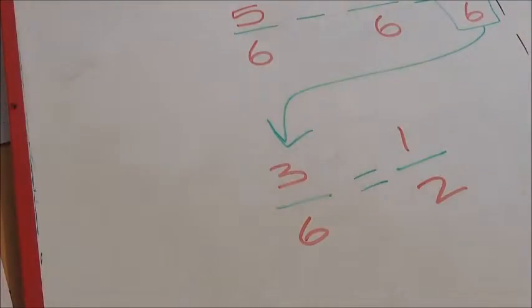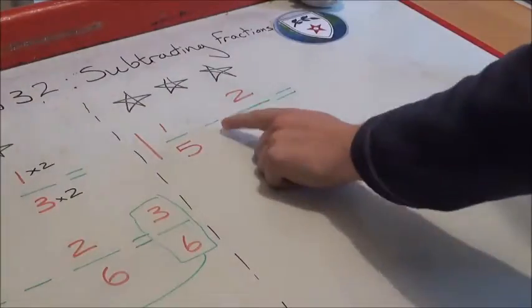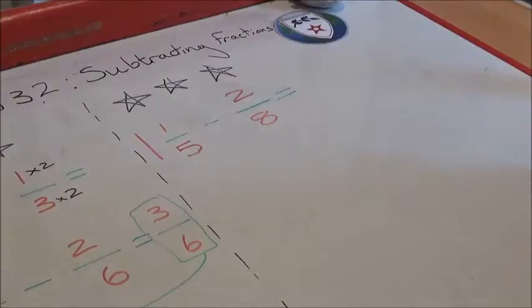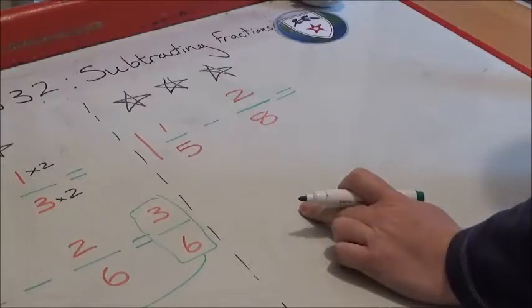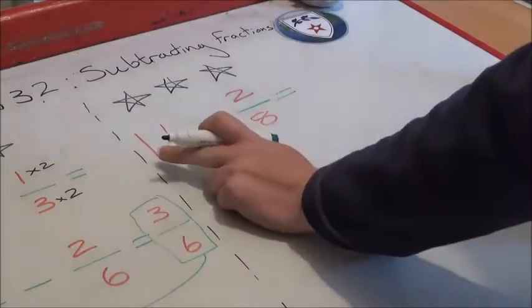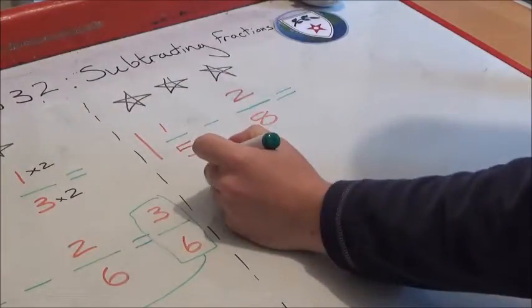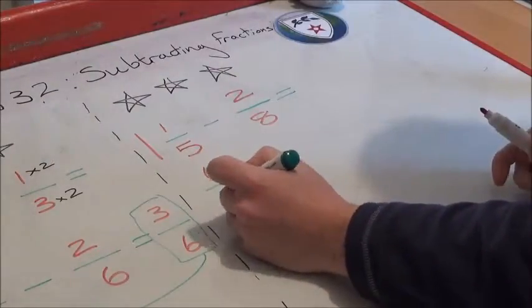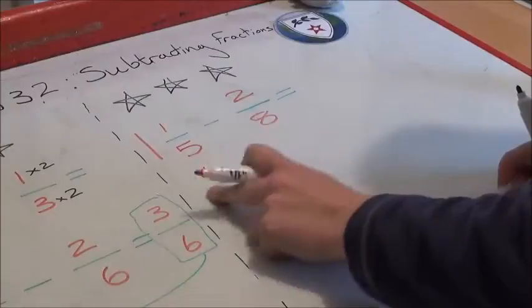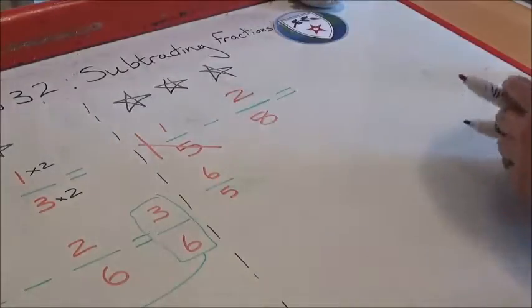Alright, now over to our three-star question. We had one and one-fifth take away two-eighths. As I said before, hopefully you will be converting this into an improper fraction first. So let's have a look at that. We know that one whole and one-fifth—that means that's five-fifths and one-fifth. So I can turn that into six-fifths. I'm just going to put a line through that so I know I've turned that into six-fifths. And now, actually, I could write that out again. So now I've got six-fifths take away two-eighths.